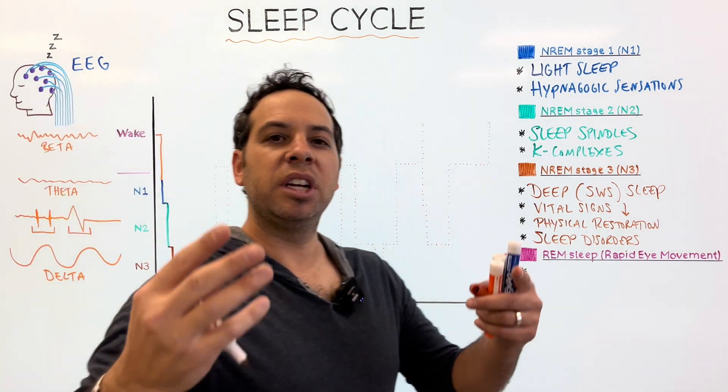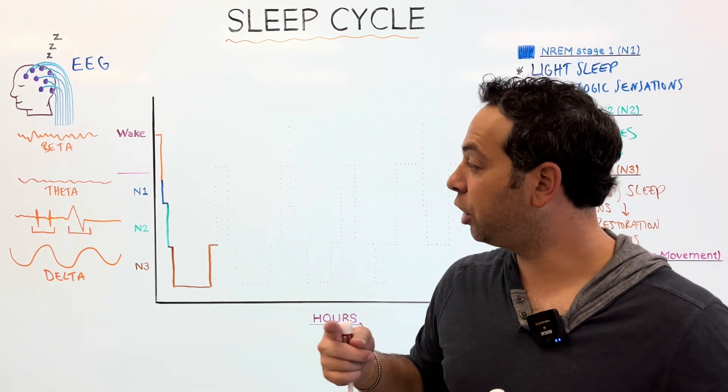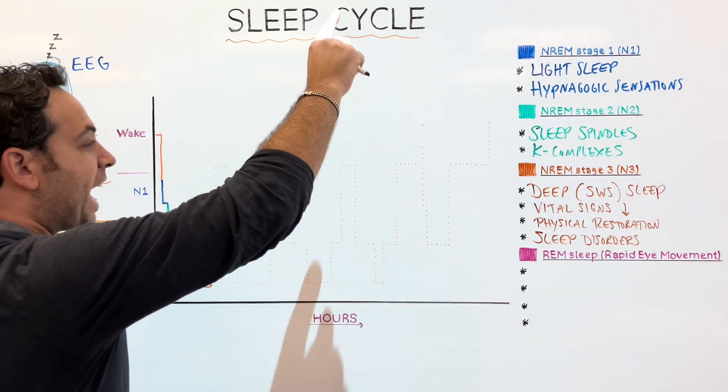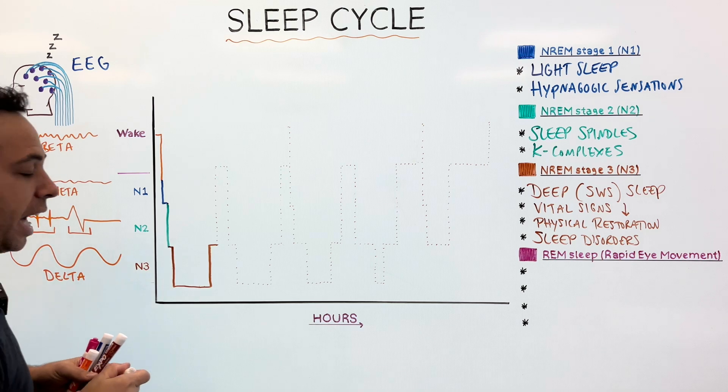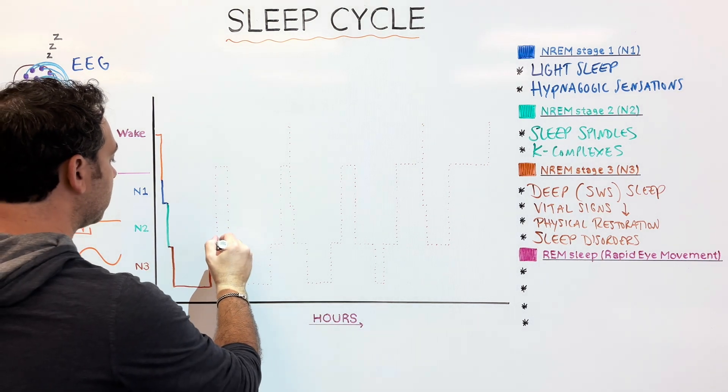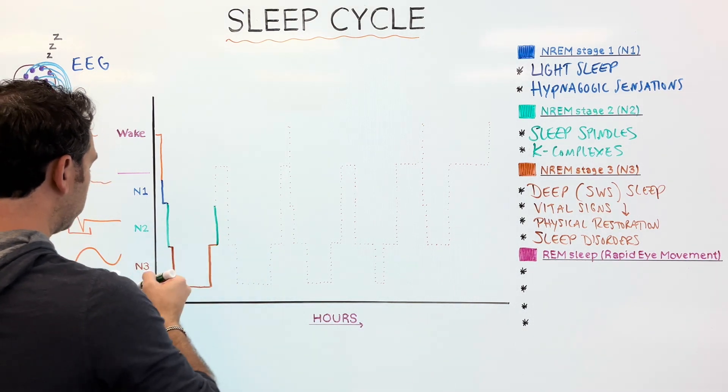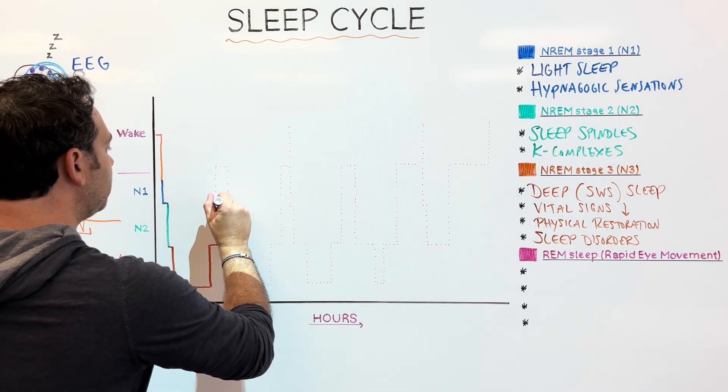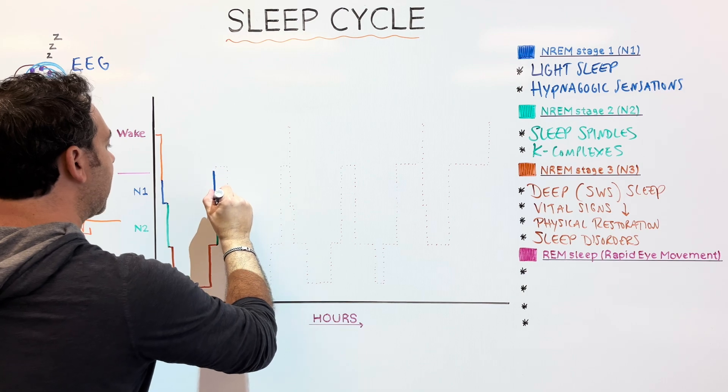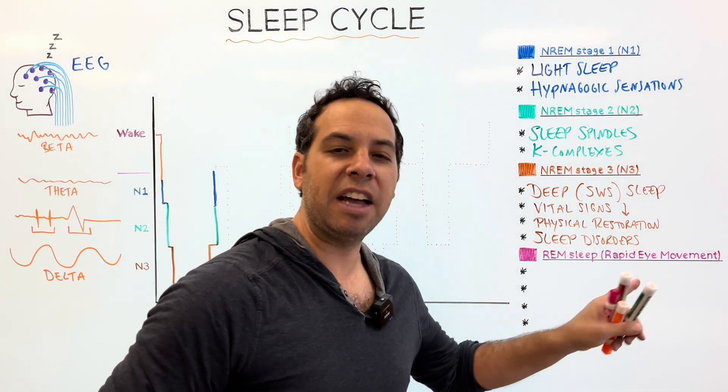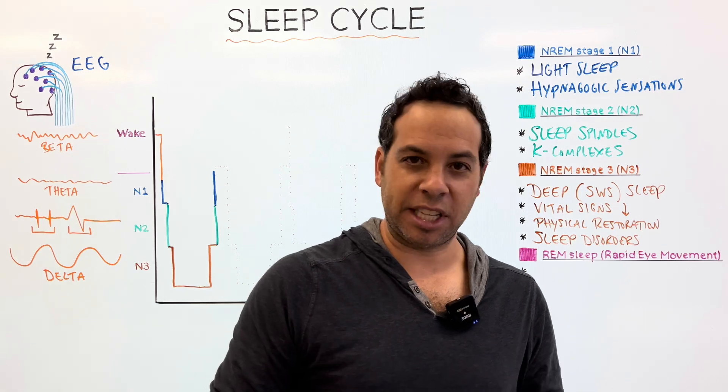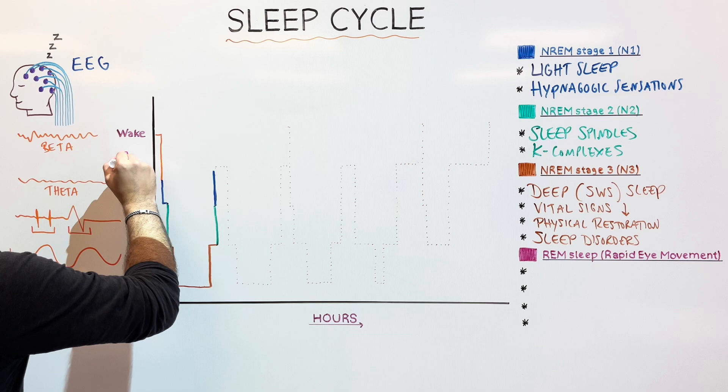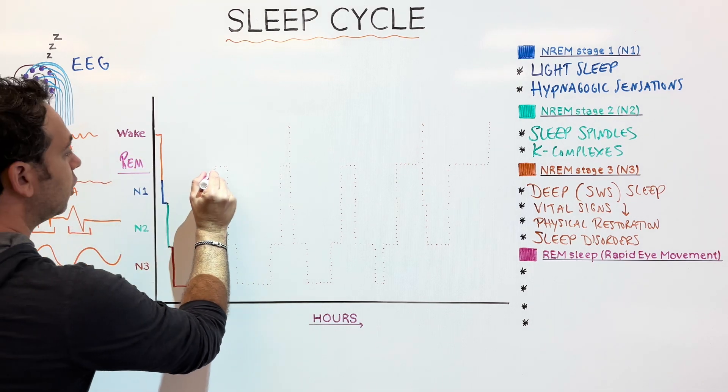All right, so what happens after that? We've gone through non-REM-1, and 2, and 3. We're going to go back up. Remember, it's a cycle. We kind of do this kind of up and down, up and down. So what do we do? We return to non-REM-2. In fact, we spend most of our sleep in non-REM-2. We're going to return to non-REM-1, and right before we wake up, you know what happens? Something amazing happens. What happens is rapid eye movement known as REM sleep.